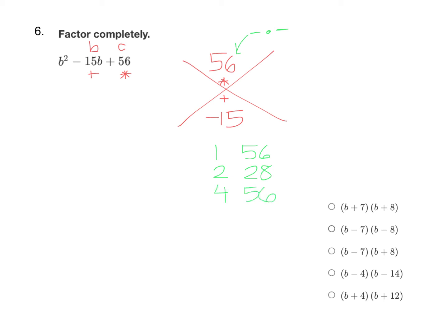I know 5 doesn't go into 56. 6 does not go into 56. But 56 divided by 7 divides evenly. 7 times 8 is 56.